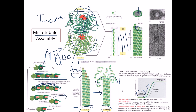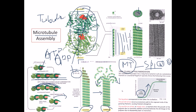Tubulin proteins are critical for cell division. When a cell starts to divide, it needs to produce an array of microtubules called spindles. The spindles help to segregate sister chromatids during cell division. This sister chromatid segregation is really important - if anything goes wrong during it, it results in abnormalities in chromosomal number.